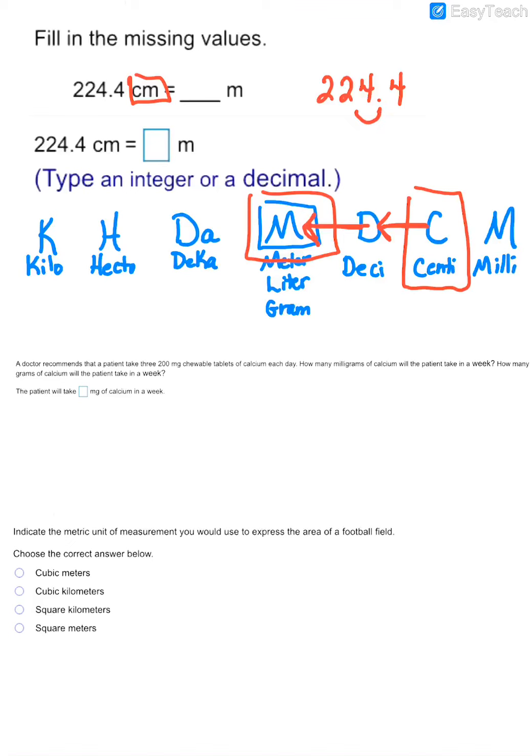So I'll take my decimal, move it 2 to the left, and that gives you your correct place for your decimal in the other unit. So that would be the same as 2.244 meters.